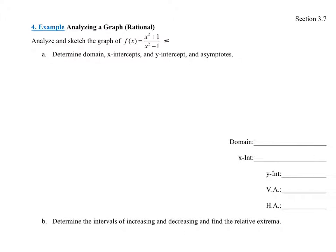With rational functions, the first thing you want to do before anything is find the domain. To find the domain, always set the unsimplified denominator equal to 0 — do not simplify the fraction first. Setting x squared minus 1 equal to 0, adding 1 to both sides gives x squared equals 1. Taking the square root of both sides — don't forget plus or minus — gives x equals plus or minus 1.